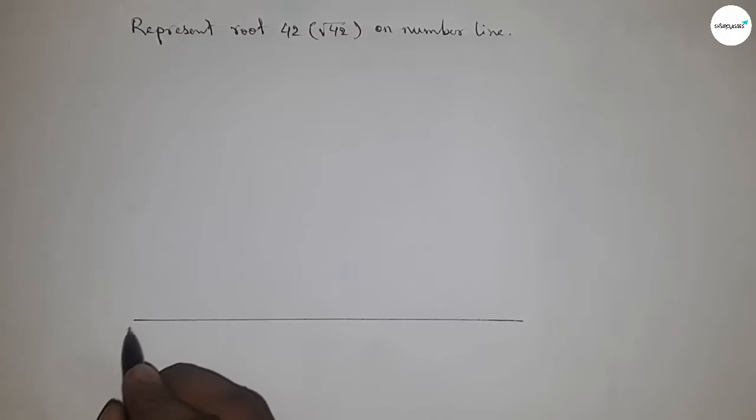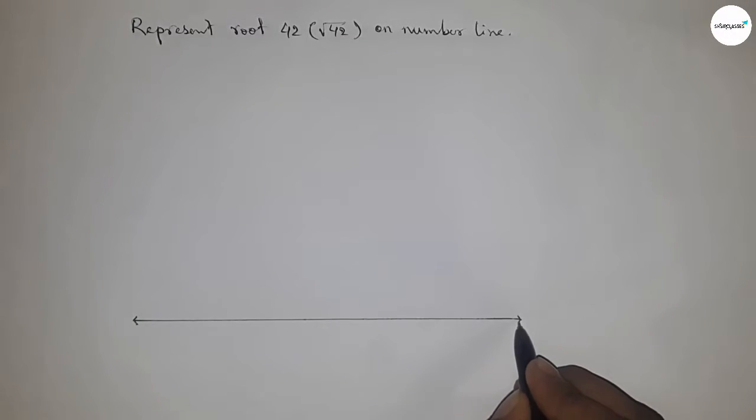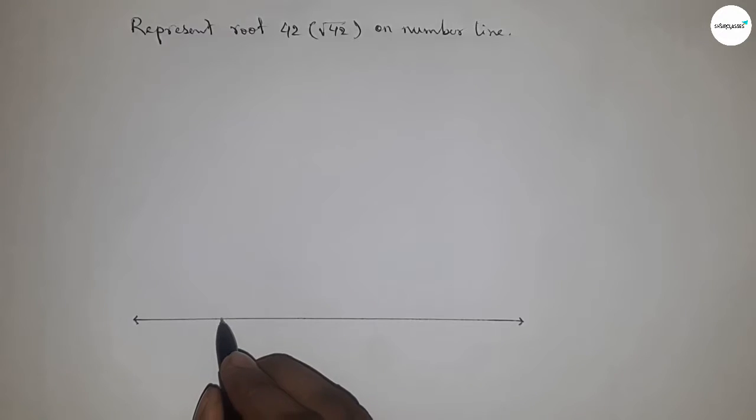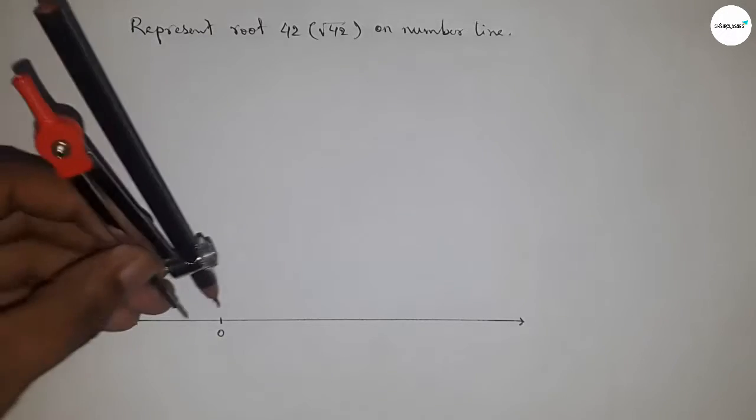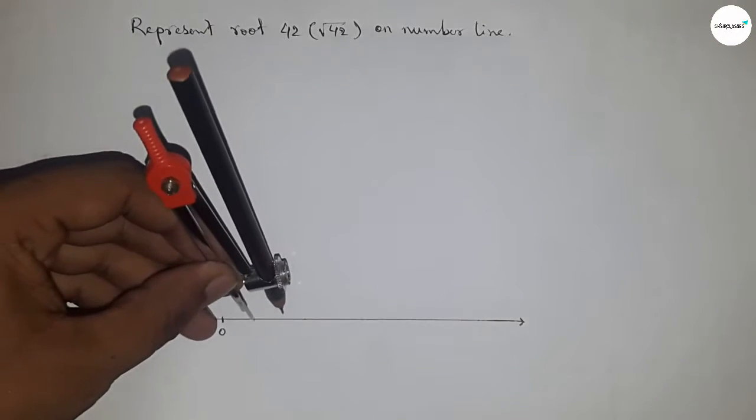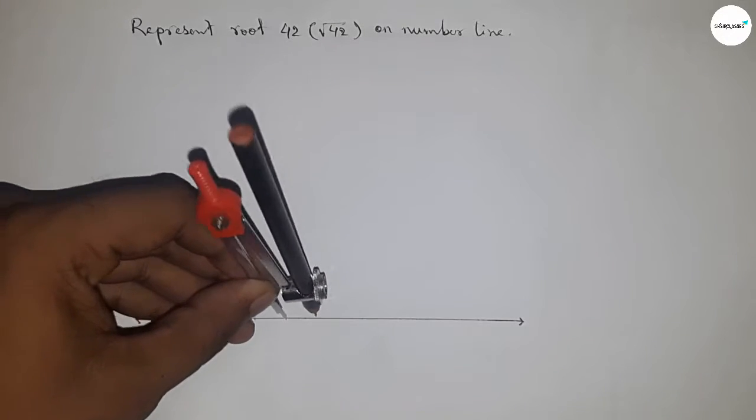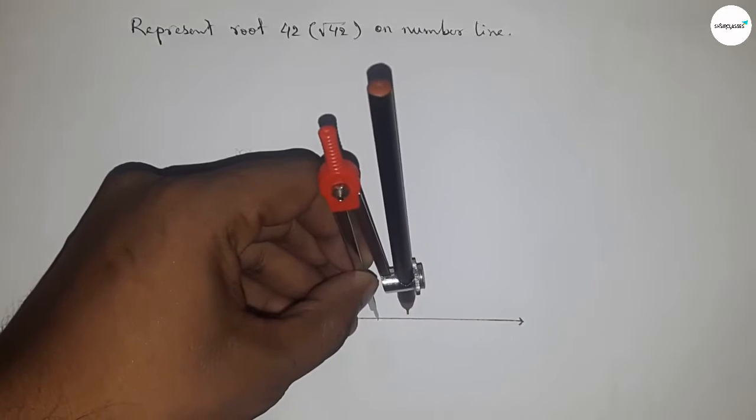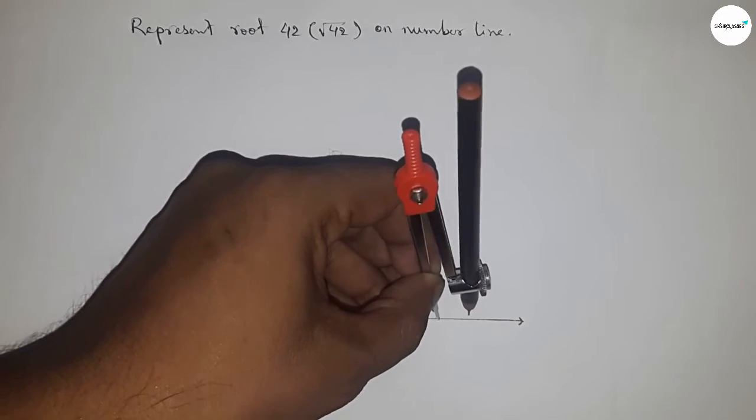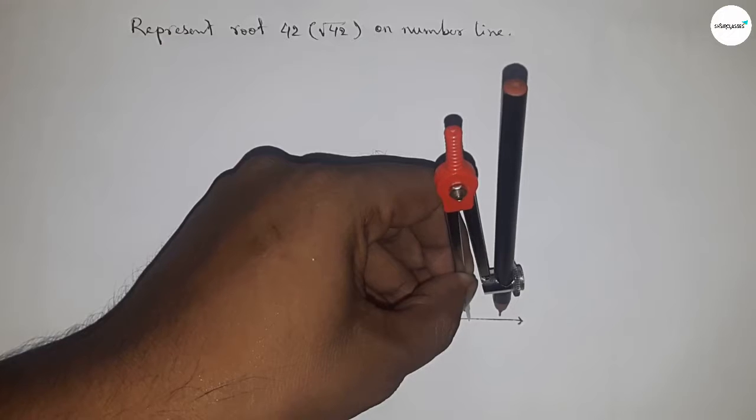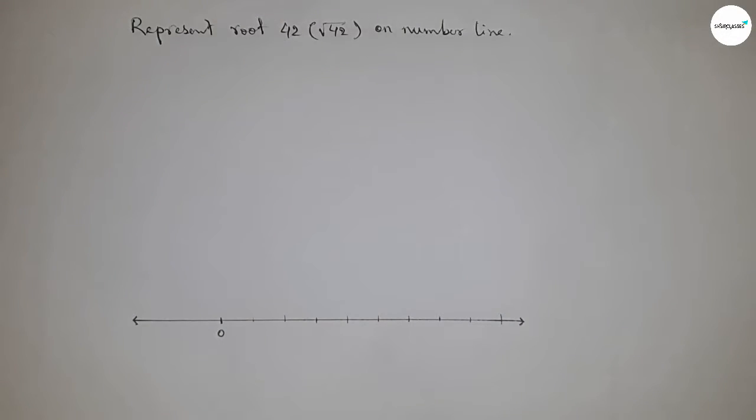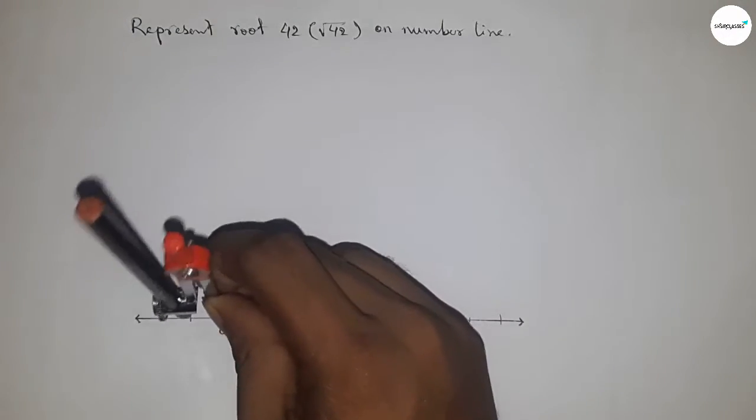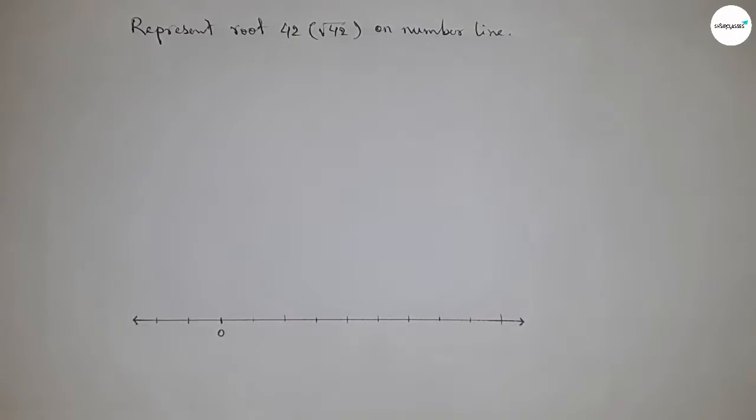Taking here the starting number zero. Next, taking any length by compass to mark the numbers on the line by this way. This length is called one unit length or unit length. You can take any length to mark the numbers on the line by this way.